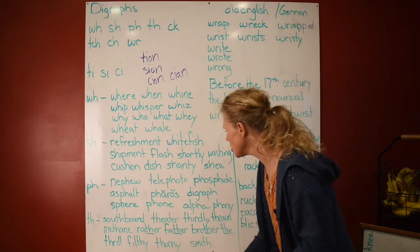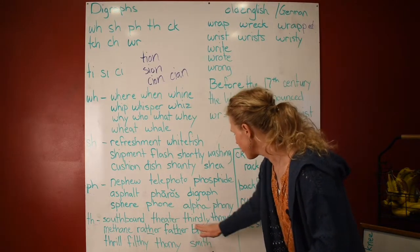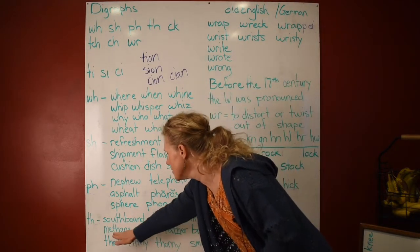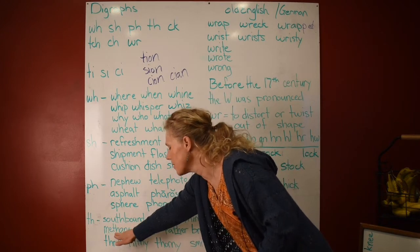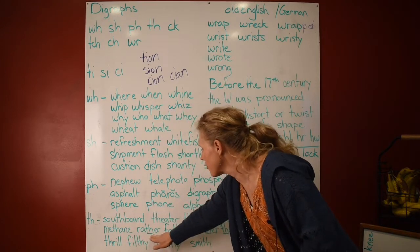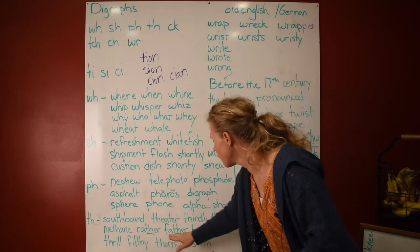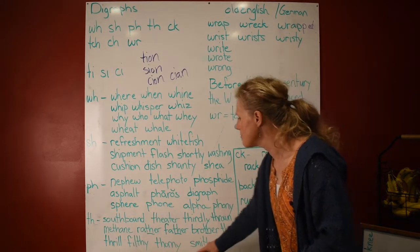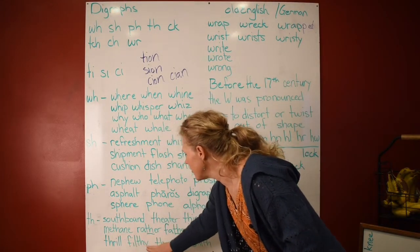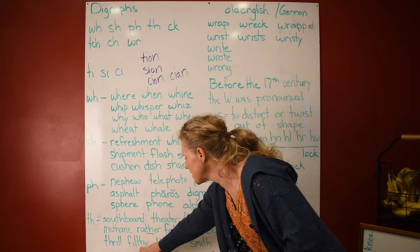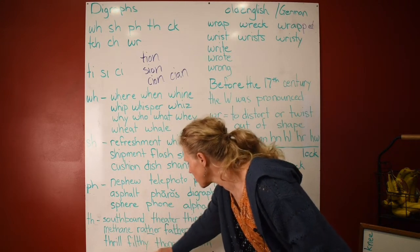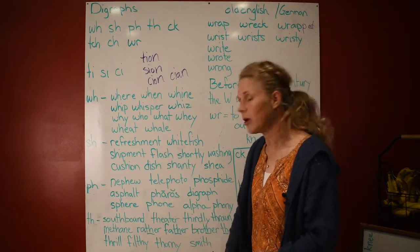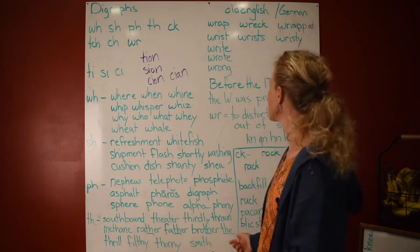Then we have: theater, thirty, throne, methane — see the TH right there. Rather — it switched to the voiced 'th.' Father. Brother. The. Thrill. Filthy — that's at the end because 'filth' is a base word. Thorny. Smith. See how those fall in all different parts of the word.